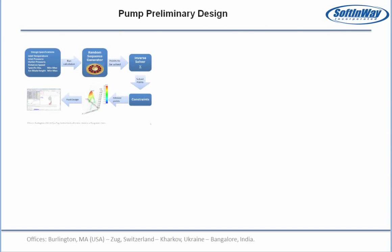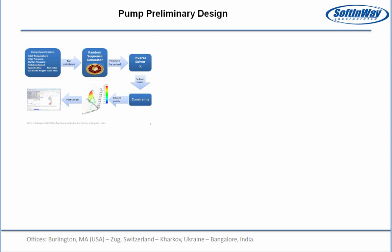Let's start with the pump preliminary design. First, the random sequence generator discretizes the design specifications. Then the inverse solver searches the design solutions for these discretized points.